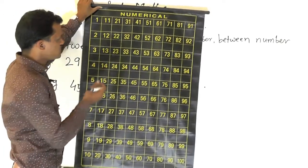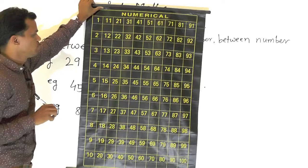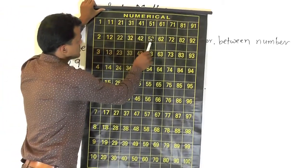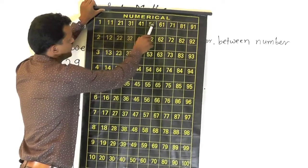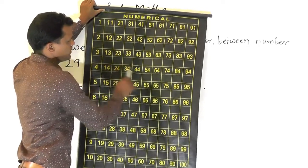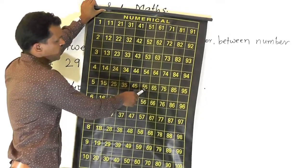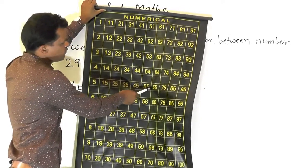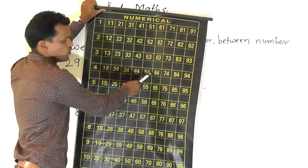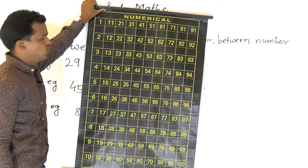Now we will understand the before number. So before number — see here this series: 51, 52, 53, 54, 55. The question is which is the before number of 55. So before 55, which number is here? 54. So the before number of 55 is 54.